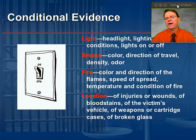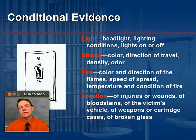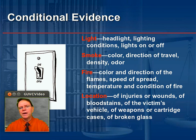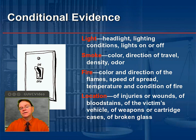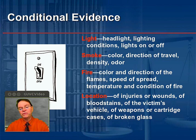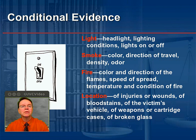Next, conditional evidence. This includes the position of a light switch — whether lights were on or off — whether a window was open, closed, or locked. Smoke at the crime scene: its color, direction of travel, density, and odor. Fire: the color of the flame, the spread of the flames, the speed of that spread, and the temperature and direction of the fire. Also, the location of injuries or wounds, blood stains, the victim's vehicle, weapons, cartridge cases, or broken glass. These are all contingent upon the actions of the victim or the suspect.